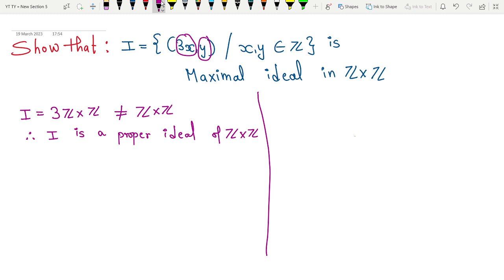The second condition is if suppose there exists some ideal J, J is an ideal of Z×Z such that I is contained inside J and this J is contained inside Z×Z.